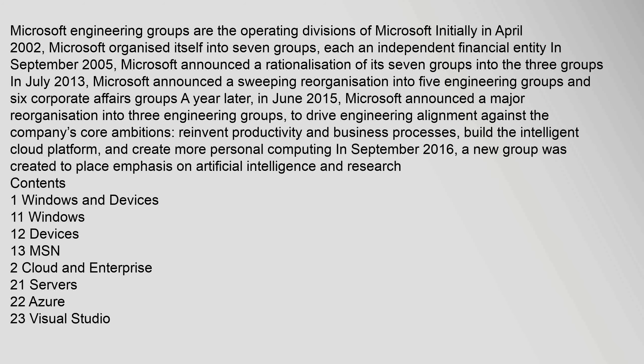In July 2013, Microsoft announced a sweeping reorganization into five engineering groups and six corporate affairs groups. In June 2015, Microsoft announced a major reorganization into three engineering groups, to drive engineering alignment against the company's core ambitions: reinvent productivity and business processes, build the intelligent cloud platform, and create more personal computing.